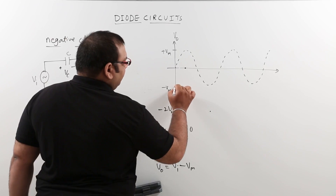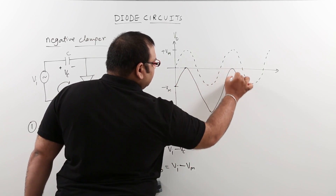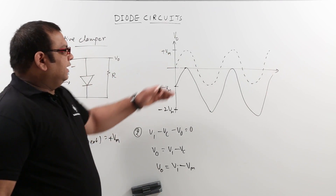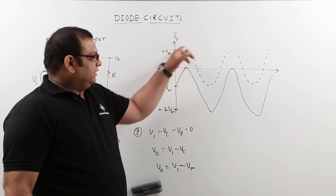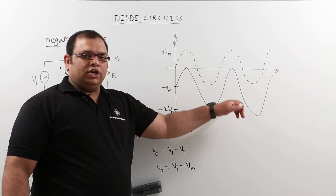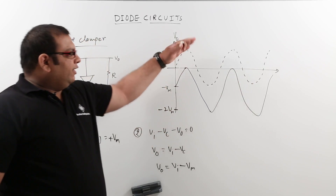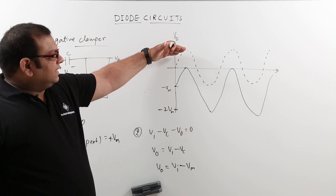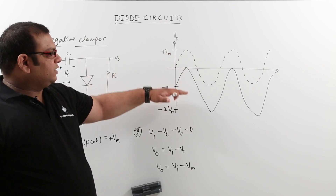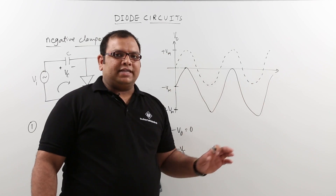The output waveform follows this pattern and continues accordingly. The dotted line represents the input waveform and the solid line represents the output waveform. The output is clamped to minus Vm on the negative side, which is why we call it a negative clamper circuit.